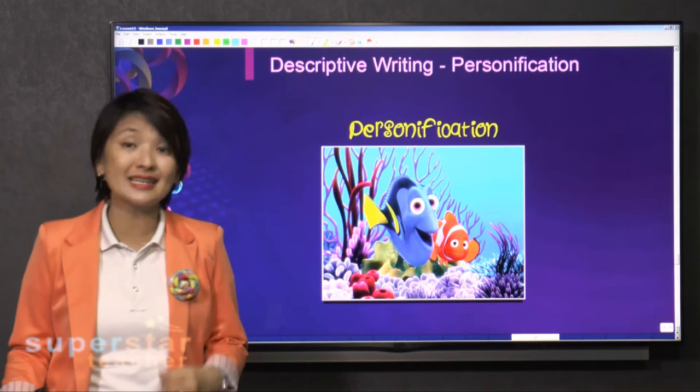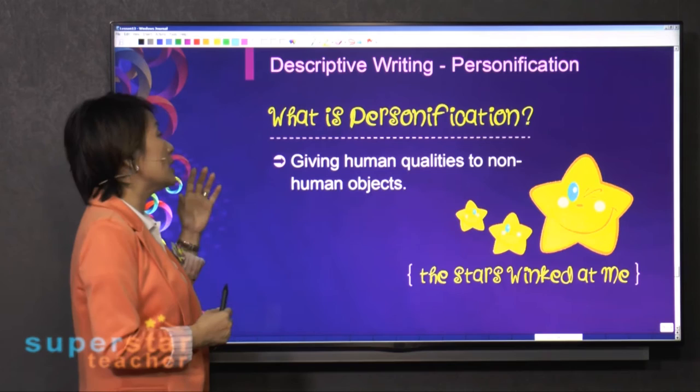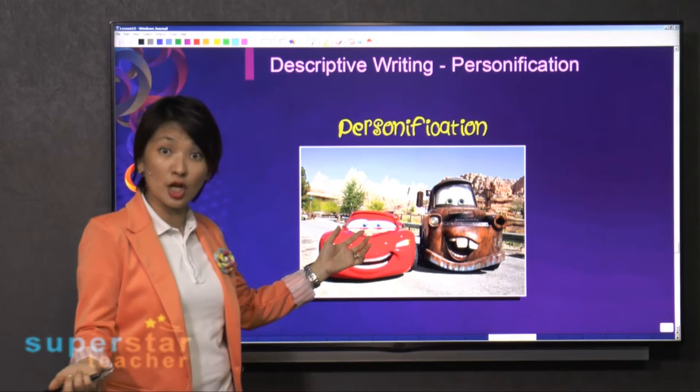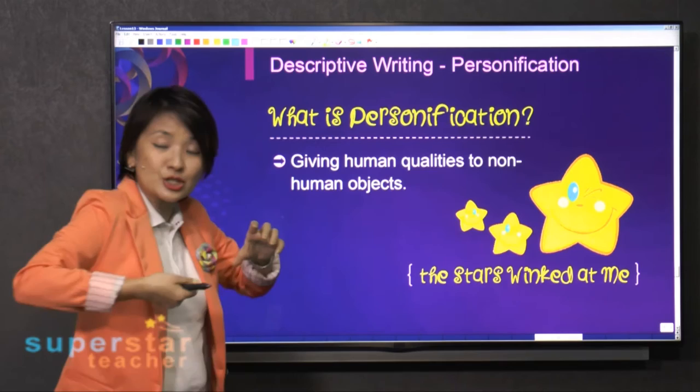Now, personification gives human qualities to non-human things. For example, is a car a human object? No, it's non-human. It's a car. But the producers of this cartoon have injected human qualities into the car.